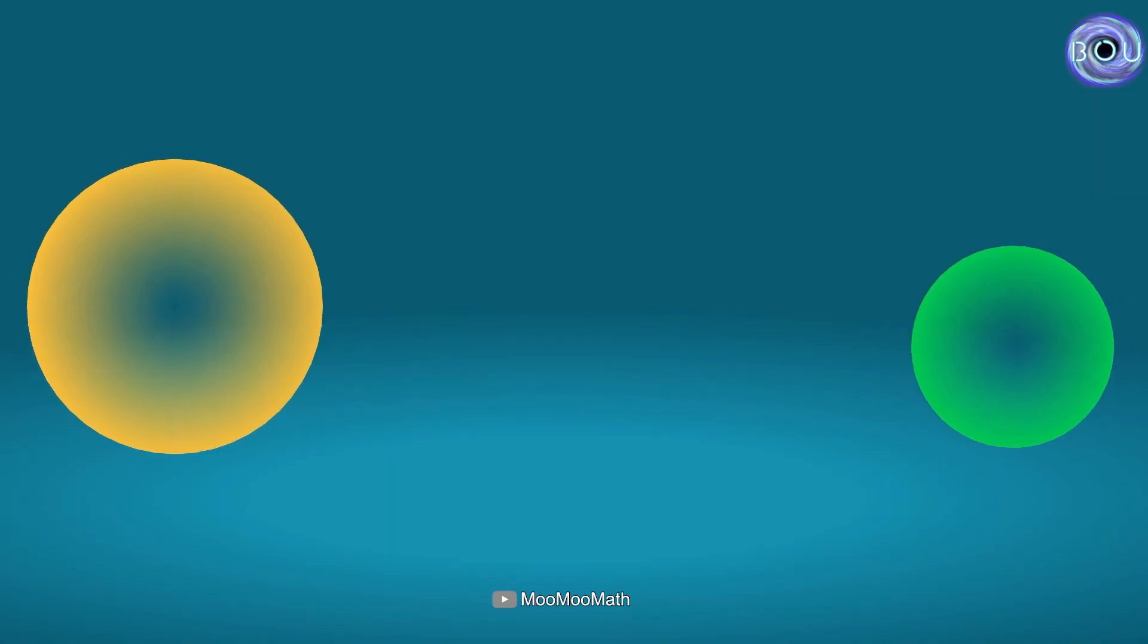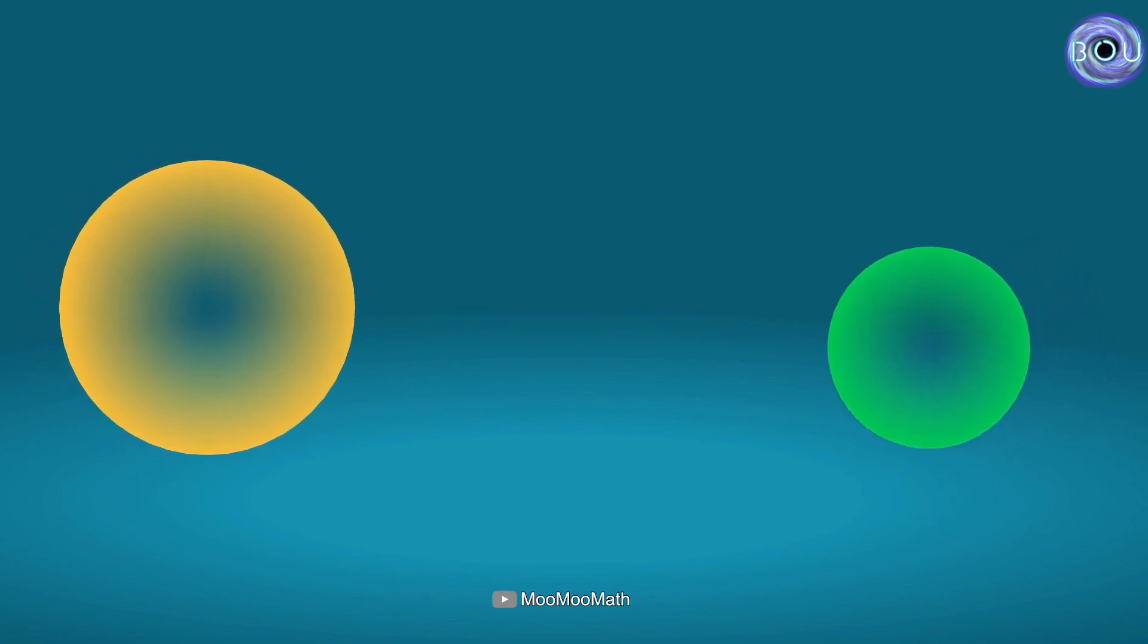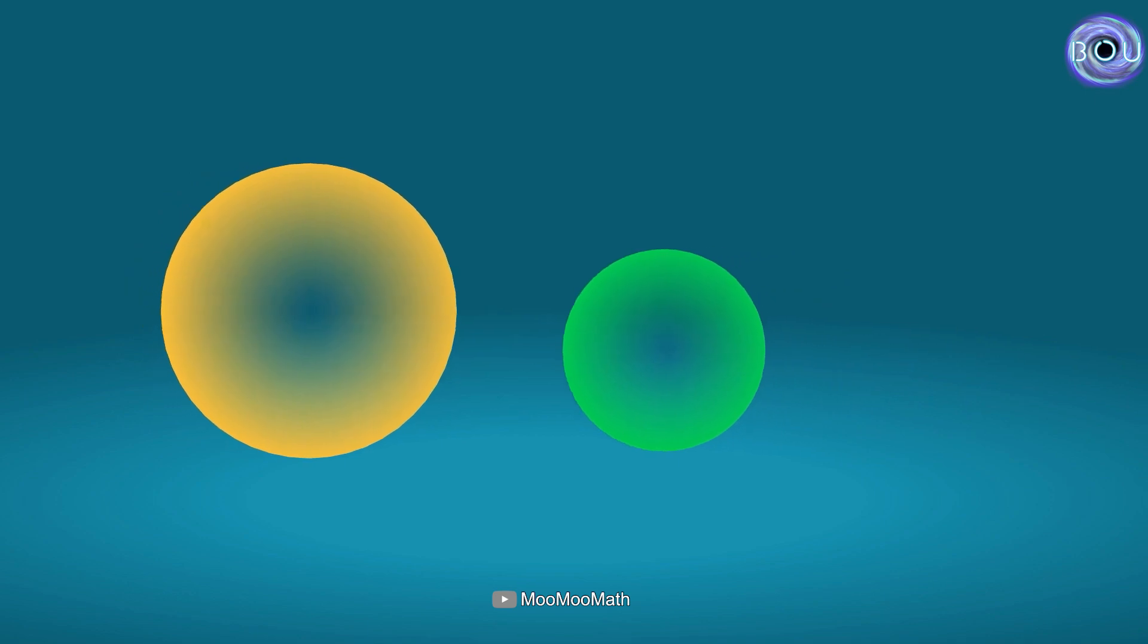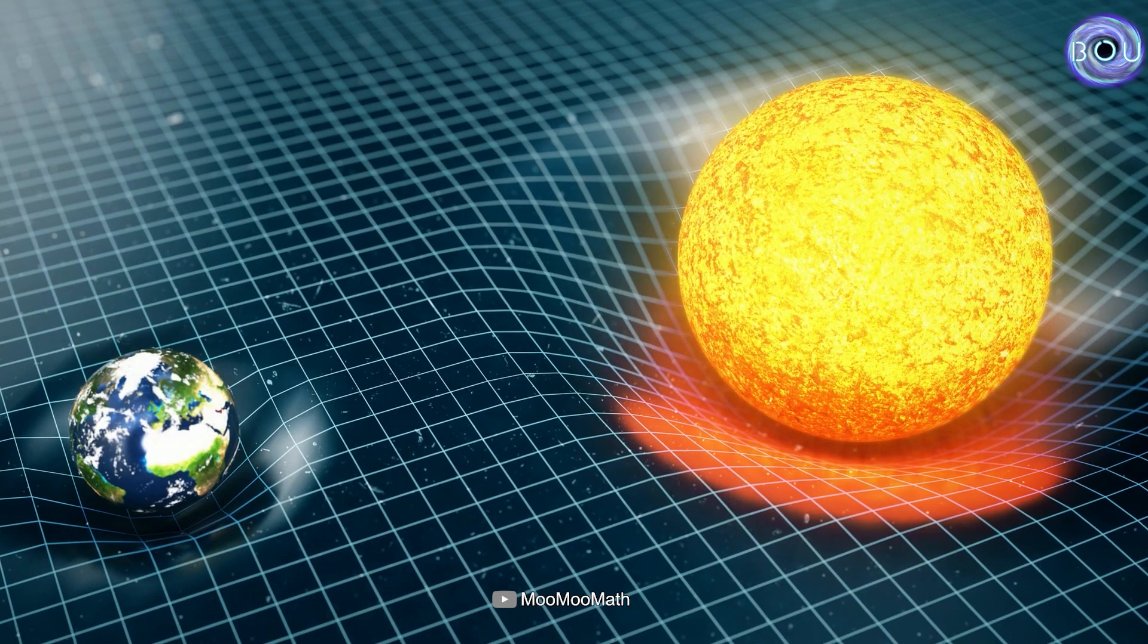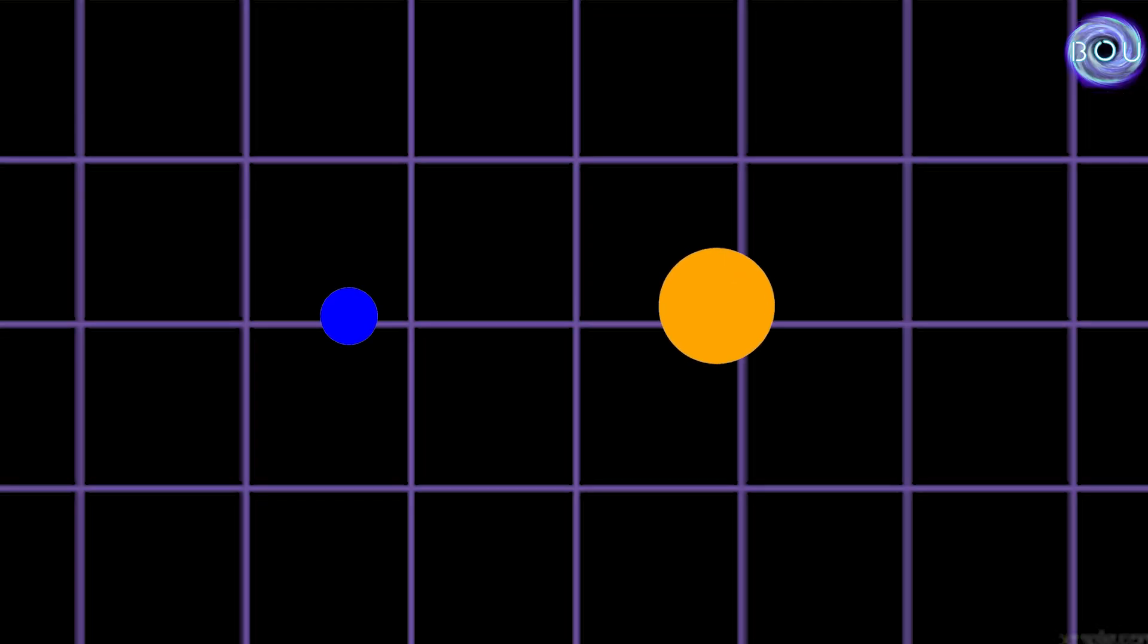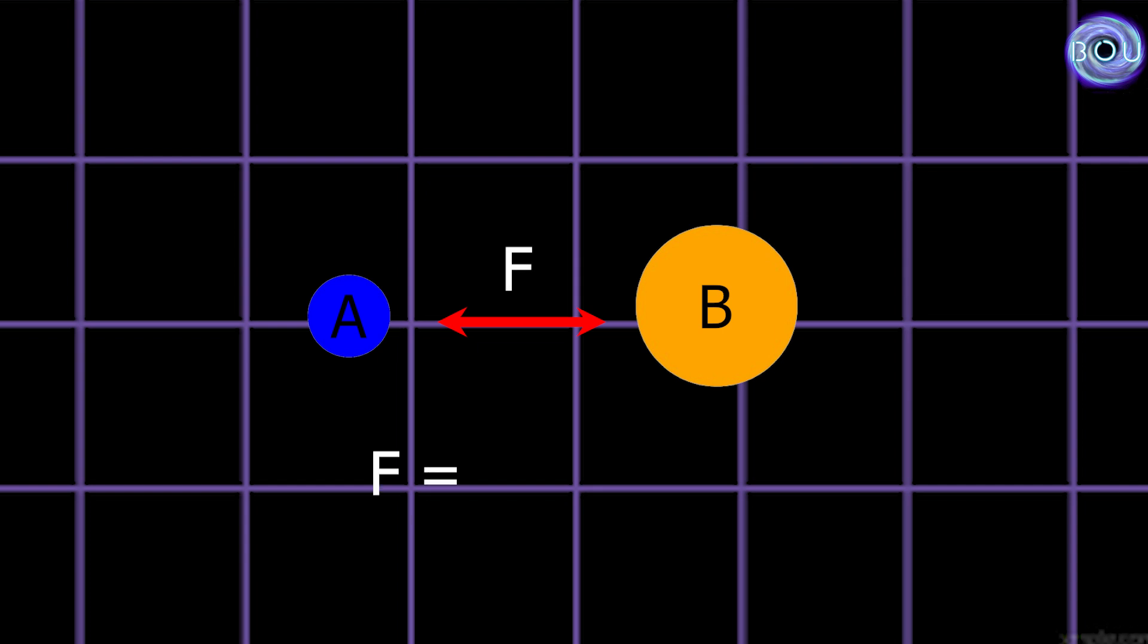Newton discovered that any object with mass can exert a force called gravitational force on the objects around it. The equations he derived for it were in this form. The force exerted by object A on object B is equal to the product of their masses multiplied by a constant called G, divided by the square of the distance between them.